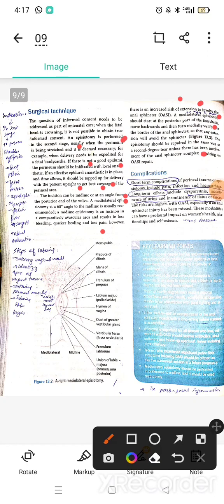In the second stage of labor, episiotomy can be performed to prevent shoulder dystocia.